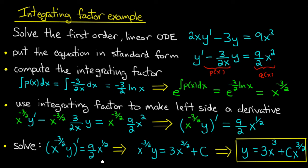The left-hand side is a derivative and the right-hand side is something we can integrate, so we integrate both sides. Integrating both sides, we get x^(-3/2) y = ∫(9/2)x^(1/2) dx, which is 3x^(3/2) plus some constant.